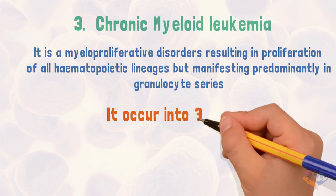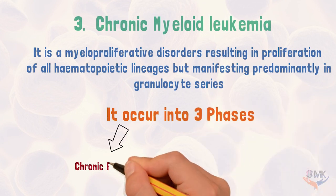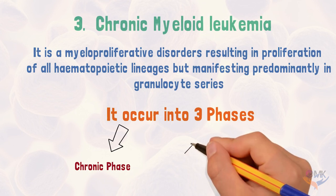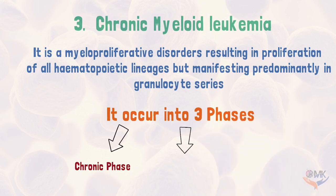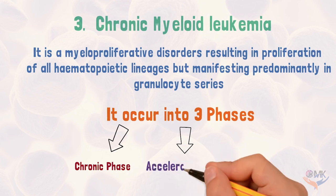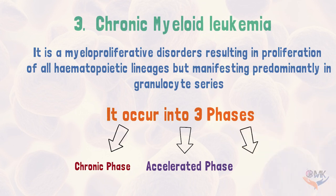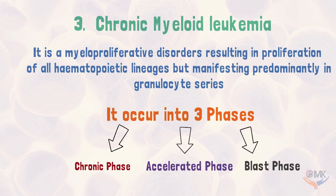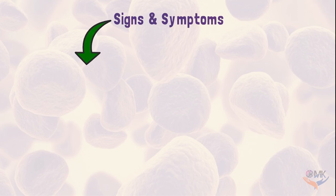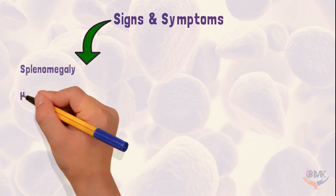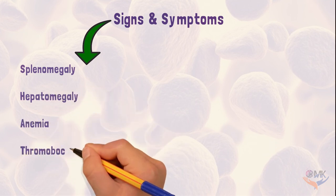Chronic myeloid leukemia occurs in three phases. First is the chronic phase, which is responsive to treatment and easily controlled. Then comes the accelerated phase, in which additional cytogenetic abnormalities occur and it is difficult to control. The last phase is blast crisis, in which the disease transforms into acute leukemia and is not responsive to treatment. Signs associated with chronic myeloid leukemia include splenomegaly, hepatomegaly, anemia, and thrombocytopenia.